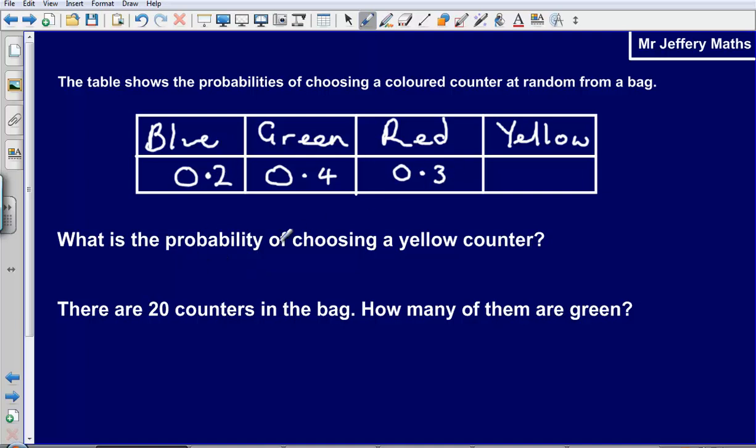Well again we're just going to need to add these up and see how many more we need to add on to make it up to 1. So 0.2 plus 0.4 plus 0.3 is 0.6 plus 0.3 is going to give us 0.9.